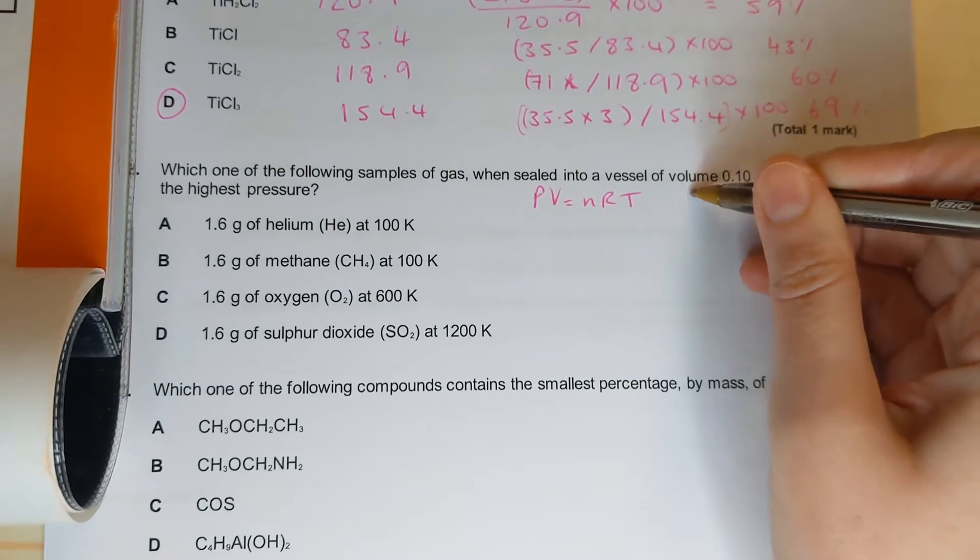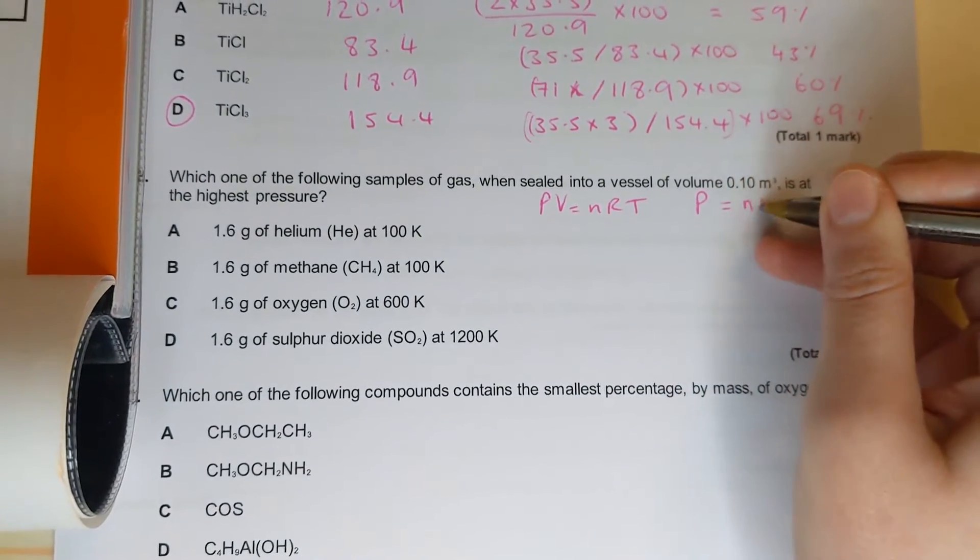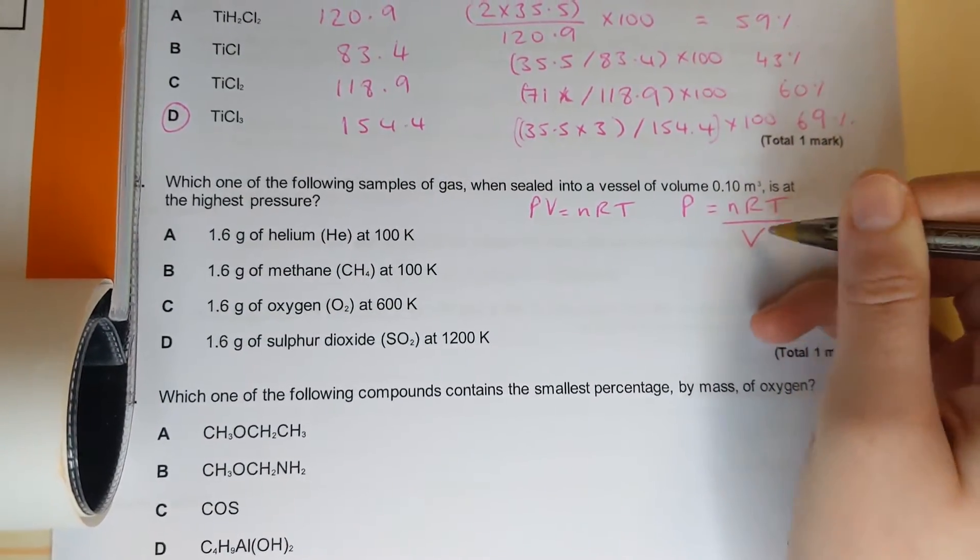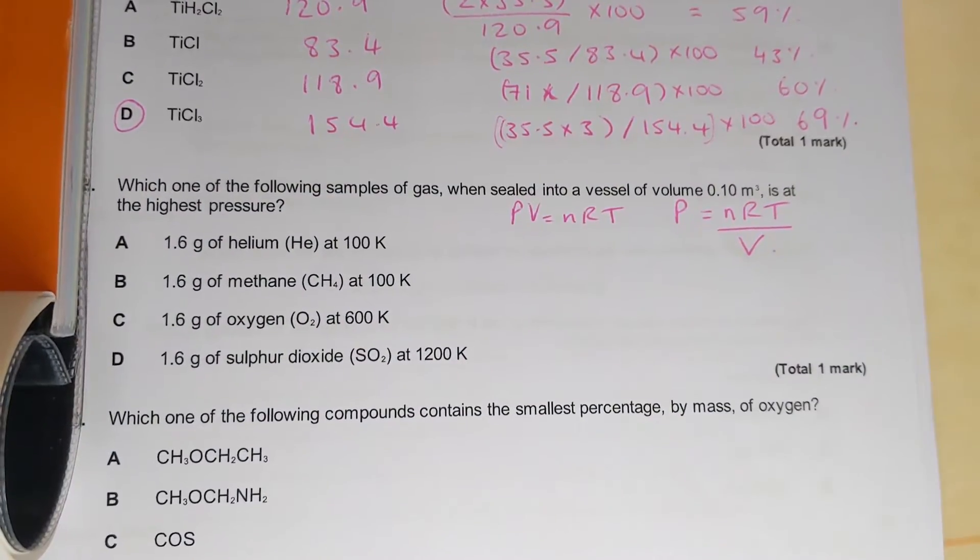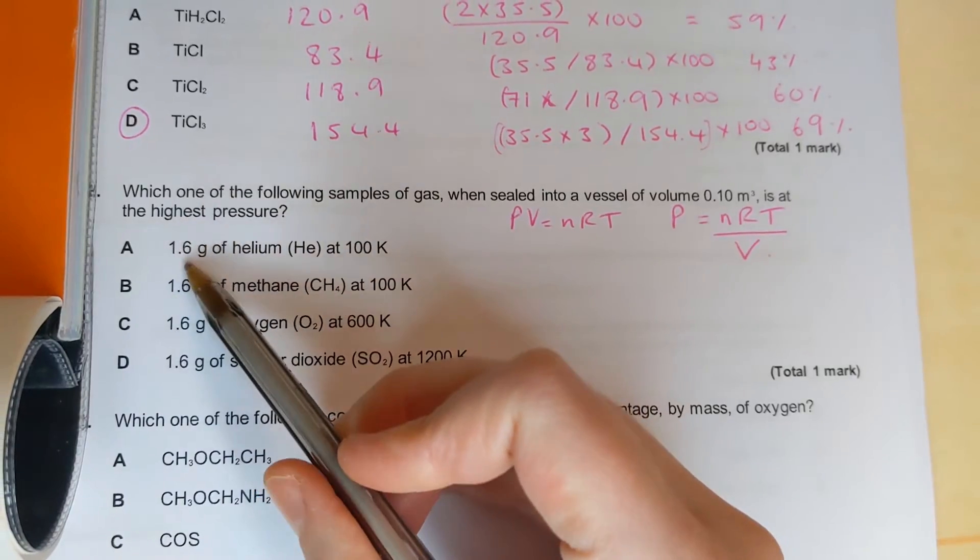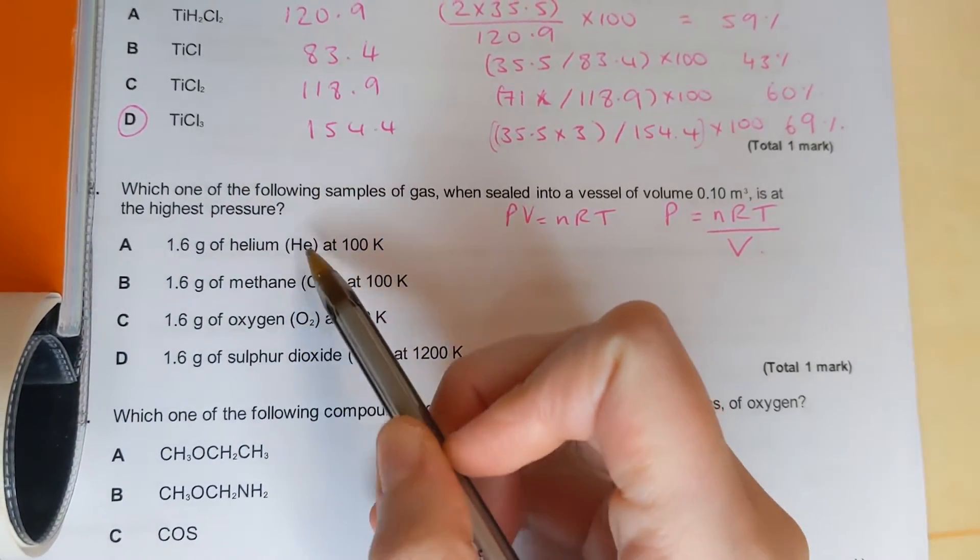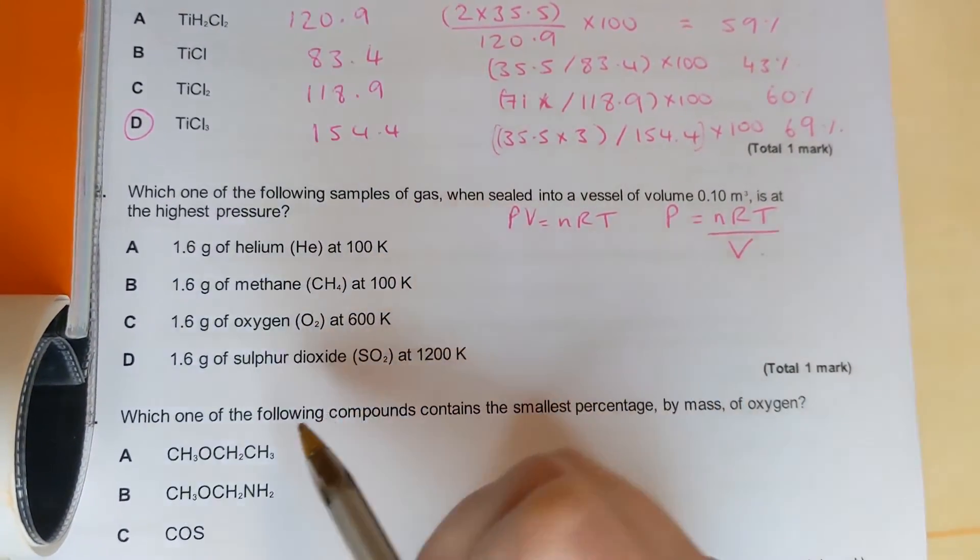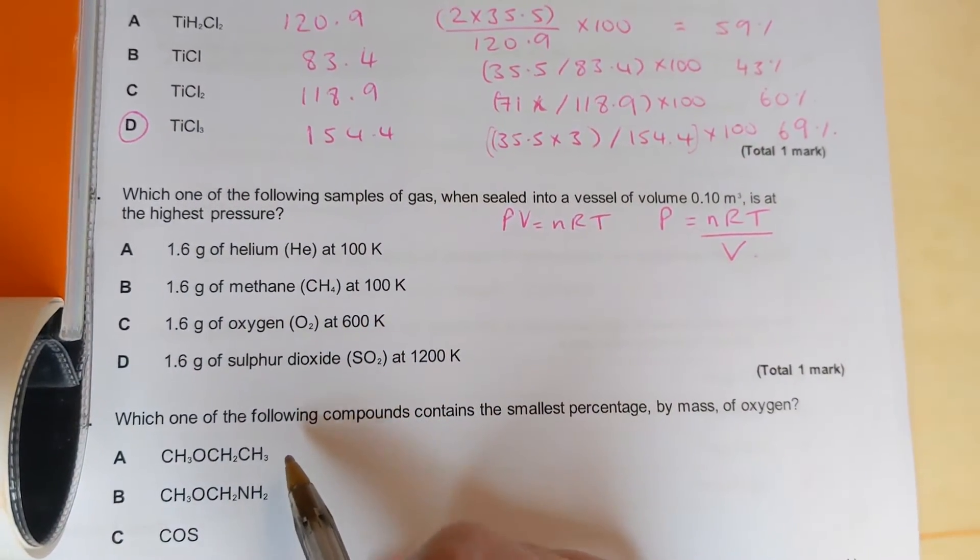So P equals n RT divided by V and we're going to calculate moles by doing mass over molar mass using the periodic table. What I'd like to do is pause the video here and have a go at plugging in the numbers, see what you get for pressure for each of these.